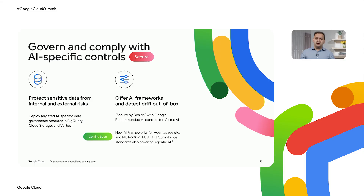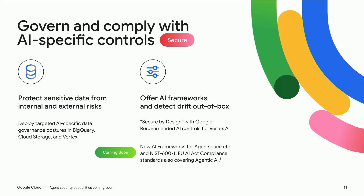To further strengthen AI security and compliance, AI protection offers Google-recommended AI controls with a focus on secure by design. Customers get governance for data in AI across BigQuery, Cloud Storage, and Vertex AI, and can detect drifts out-of-box. These controls are designed with deep knowledge of AI architectures on Google Cloud, ensuring customers are protected against internal and external AI risks effectively. Additionally, we will offer new AI frameworks covering agent space-specific access, identity, auditability, administrative controls, and new AI compliance standards — empowering customers to apply governance policies consistently across their heterogeneous agent deployments on agent space, agent engine, and beyond.